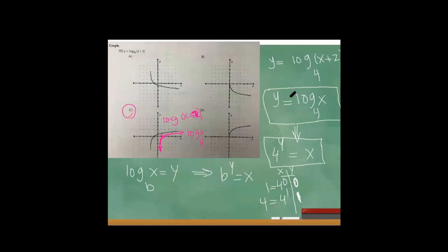When graphing a log function, convert it to exponential form, find the basic graph, then apply the shifting factor. If the number is added inside the function, shift right or left. If the number is added outside the function, shift up or down. In this case, the number is inside, so we shift left 2 units.